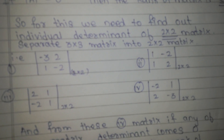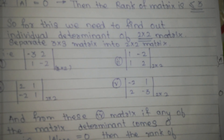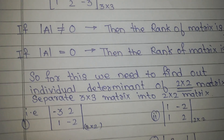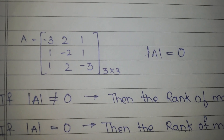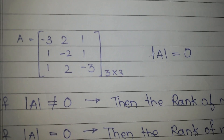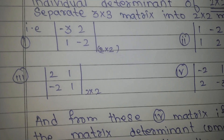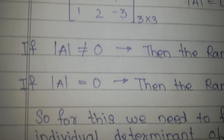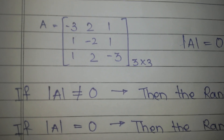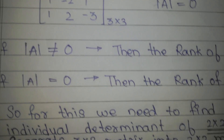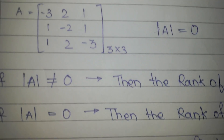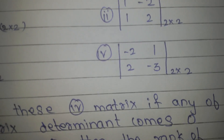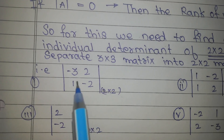For this, we need to find out the individual determinants of 2x2 sub-matrices from the 3x3 matrix. Now divide it into 2x2 sub-matrices: the first one is minus 3, 2, 1, minus 2; the second one is 2, 1, minus 2, 1; the third one is 1, minus 2, 1, 2; and the fourth is minus 2, 1, 2, minus 3.